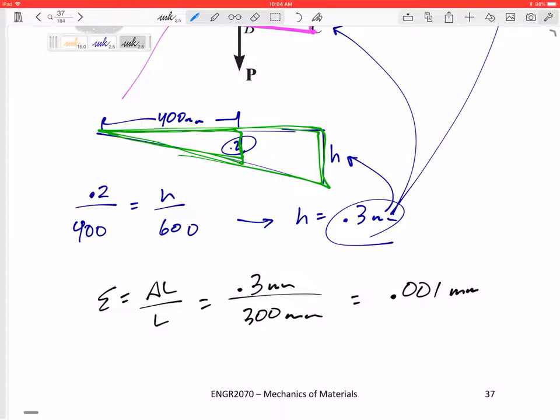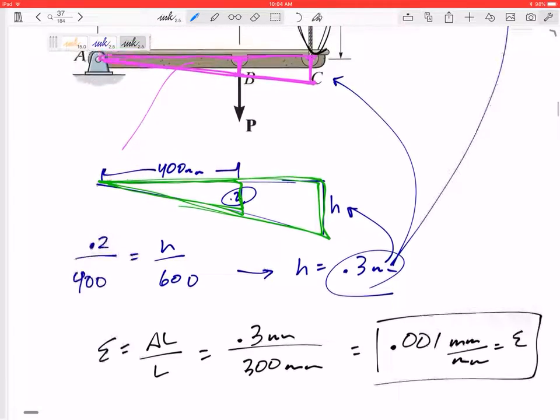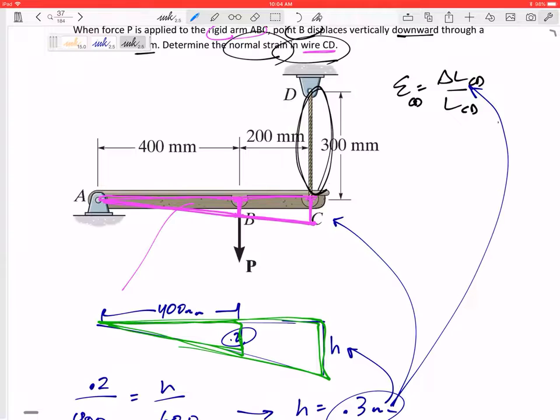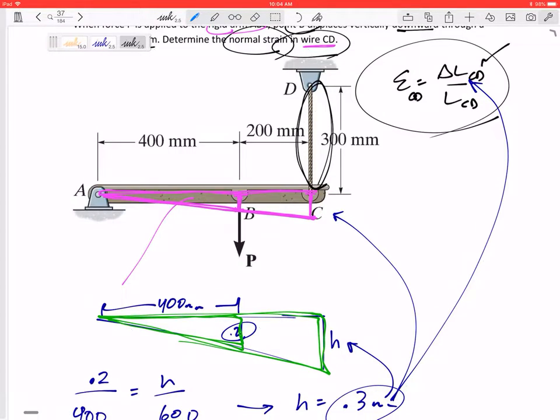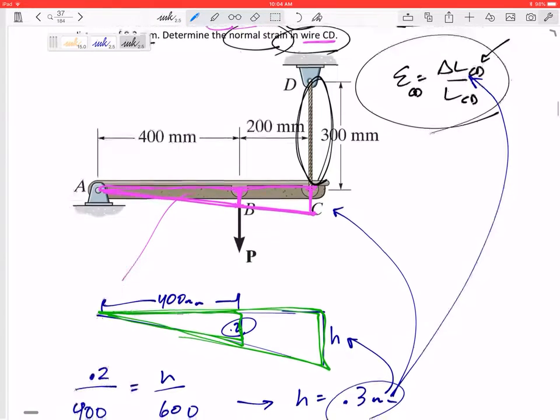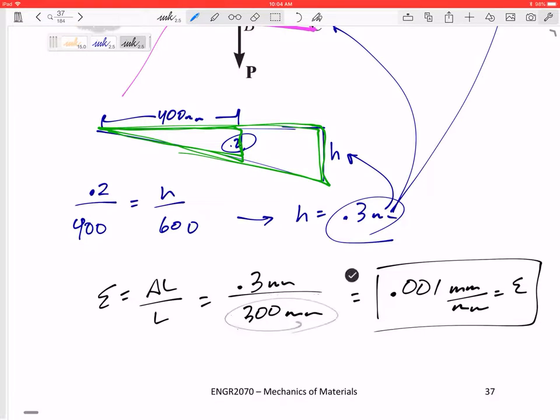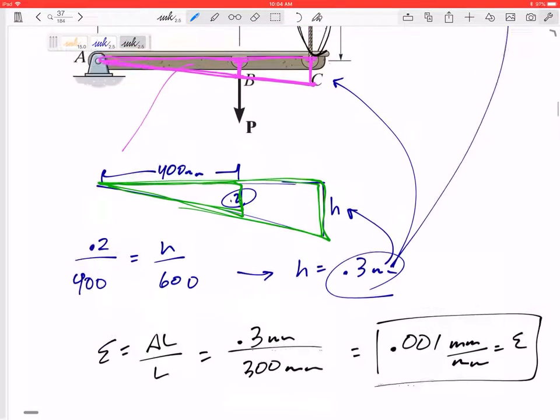So I would accept that as unitless or millimeters per millimeter. That is the strain of cable CD. We knew strain is delta L over L. Sometimes you just have to be creative to figure out how to calculate that delta L, and then make sure you divide it by the original length of that cable.